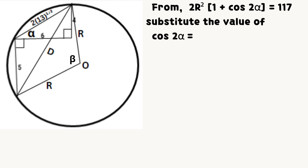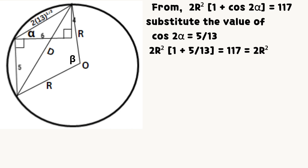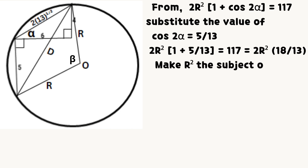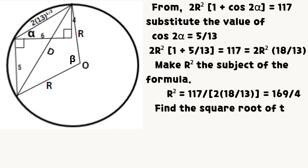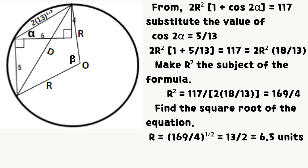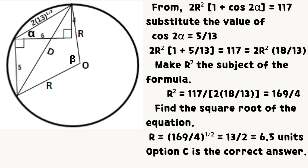From the equation obtained by equating equation X and Y, substitute the value of cosine 2 alpha, which equals 5 divided by 13. Making R squared the subject of the formula and finding the square root, we have that R equals the square root of 169 divided by 4, which simplifies to 13 divided by 2, that is, 6.5 units. Option C is the correct answer.